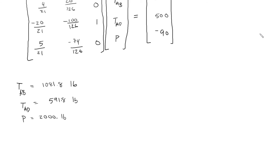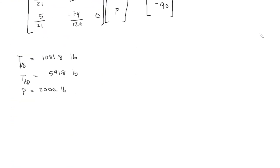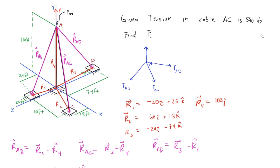After plugging the matrix system into MATLAB, I get that P, the reaction force, equals 2,000 pounds. To recap: we defined a free-body diagram at point A, identified tension forces in arbitrary 3D directions, defined position vectors R1 through R4, derived directional and unit vectors, expressed tension force vectors, applied equilibrium by summing each force component, and solved the resulting system of linear equations to find P.